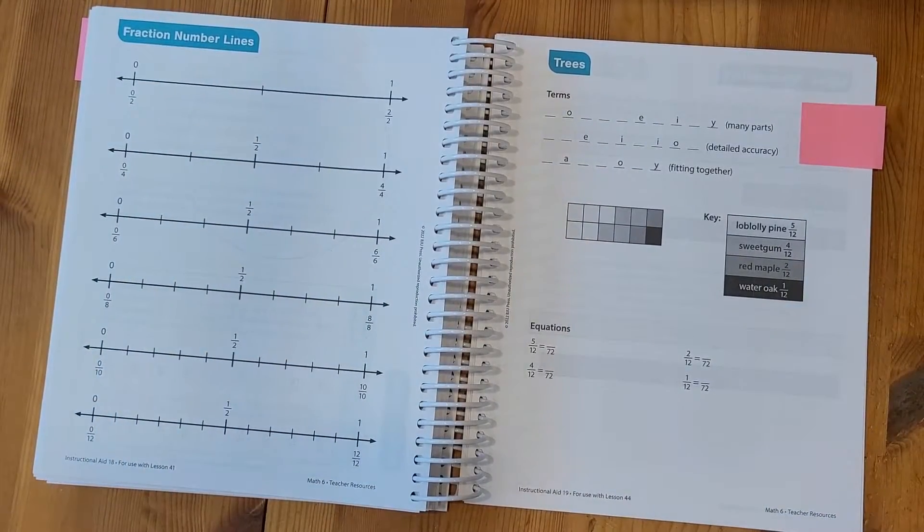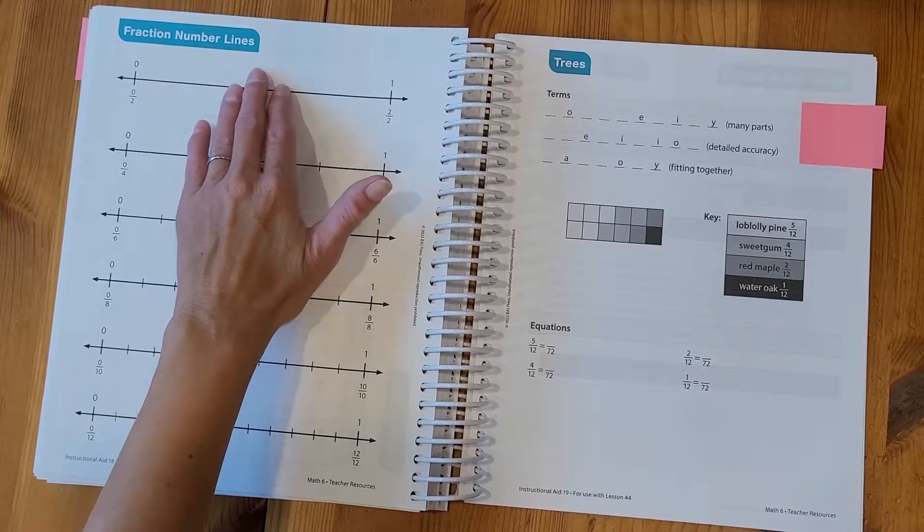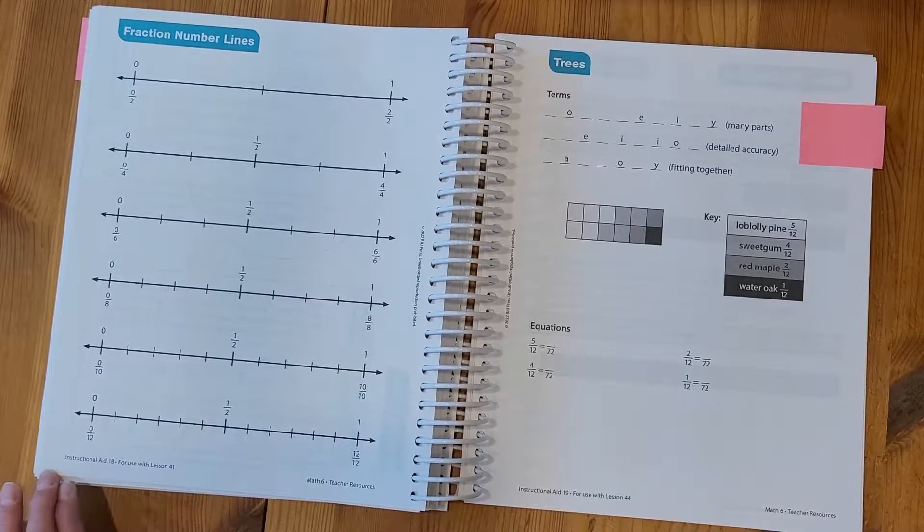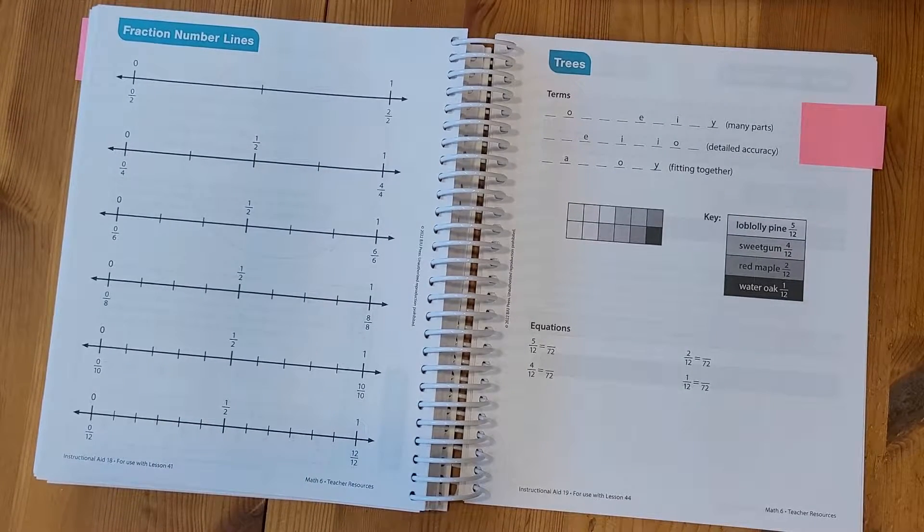At the back of the book, this is where those instructional aids are. So remember on Lesson 41, we needed 18 fraction number lines. So this is the fraction number lines page and at the bottom I see that this is instructional aid 18. It says for use with Lesson 41. So this is the page I would use to help teach my lesson.